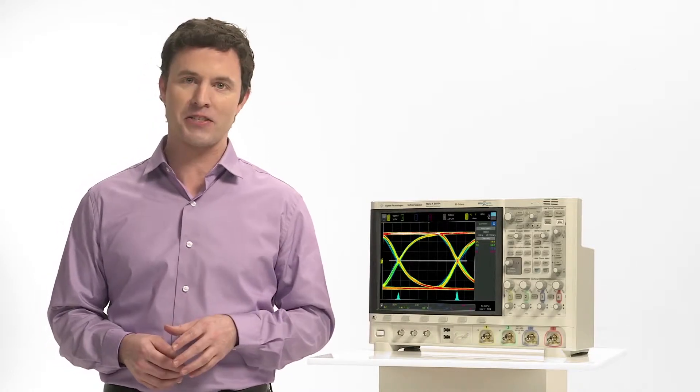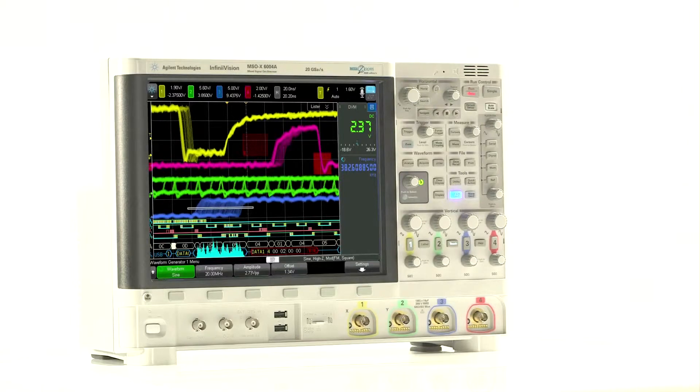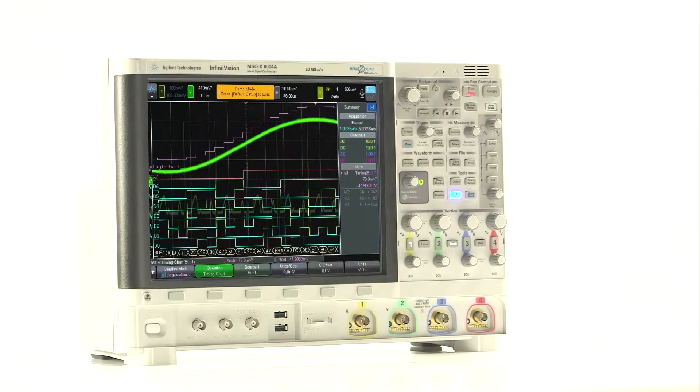The 6000X-Series offers unprecedented instrument integration. It's six instruments in one: a 6 GHz oscilloscope, of course; as a mixed signals oscilloscope, it adds 16 digital channels; plus,